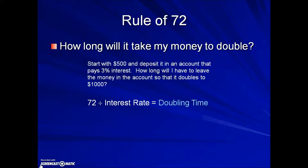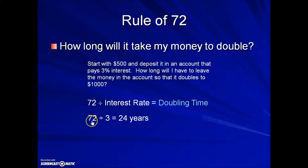The Rule of 72 is used to calculate doubling time and the formula is as follows: 72 divided by the interest rate. In this example the problem states that the interest rate is 3%. We don't convert this percentage into an equivalent decimal — we just take the number portion of the percent and divide 72 by that value. This results in 24 years.